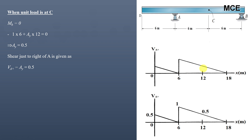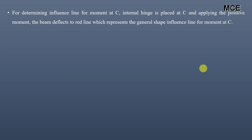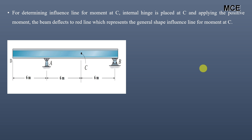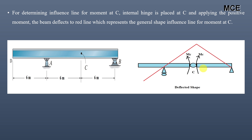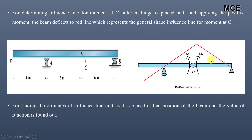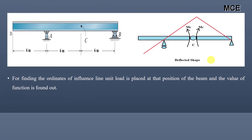Now we find the influence line for moment at C. According to the Müller-Breslau principle, we place an internal hinge at C and apply a positive moment. The beam deflects to the red line representing the general shape for moment at C. The portions near A and B remain fixed, while segments between them rotate, with parts going up and down. This is the general shape of the influence line for moment at C.